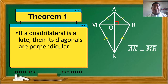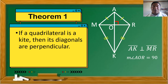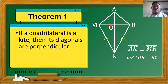Because they are perpendicular, they form right angles. The measure of angle A-O-R is equal to 90 degrees. The remaining angles formed at the intersection are also right angles. For example, angle M-O-K is also a right angle because of the Vertical Angle Theorem — if angle A-O-R is a right angle, then angle M-O-K is also a right angle. Therefore, the measure of angle M-O-K is equal to 90 degrees.